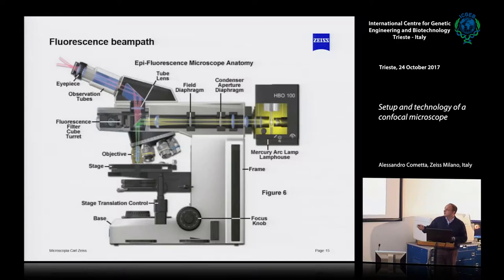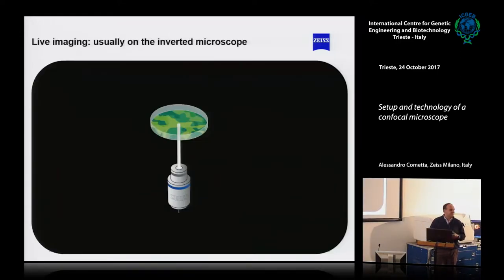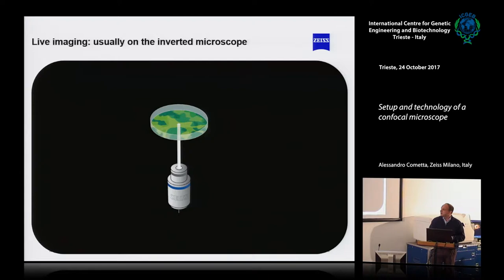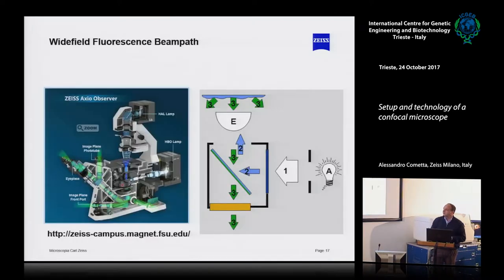This is an upright microscope, and when we speak about cells we usually work on a petri dish, so we use gravity to keep the cells on the petri. Of course, the microscope then has to be an inverted one, and the cube is oriented in the opposite direction.